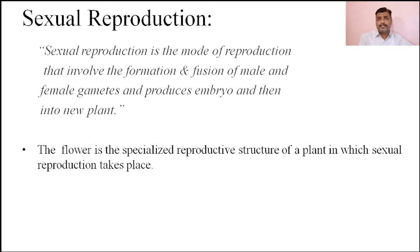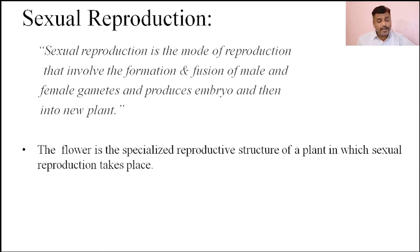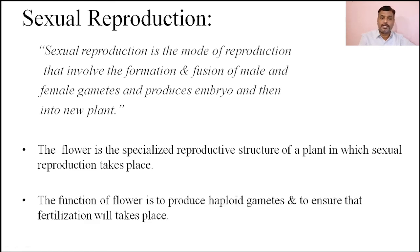As far as angiospermic plants are concerned, for the process of sexual reproduction a special kind of structure is developed which is known as the flower. This flower is absent in the remaining groups of plants — algae, bryophyte, pteridophyte, and gymnosperm. Only in angiosperms are flowers produced. The flower is a specialized reproductive structure of the plant in which sexual reproduction takes place. The function of the flower is to produce haploid gametes and to ensure that fertilization will take place.